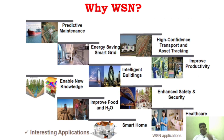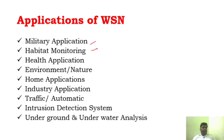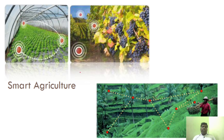The application of WSN is in almost all fields. Wireless sensor networks are used in healthcare, smart homes, industrial automation, intelligent buildings, and smart cities. Applications include military, habitat monitoring, health, environment, home automation, industrial applications, traffic systems, intrusion detection, and underground and underwater analysis. As you can see from these images, sensor networks are used in smart agriculture to analyze and monitor crop growth — many sensors are used in agriculture.